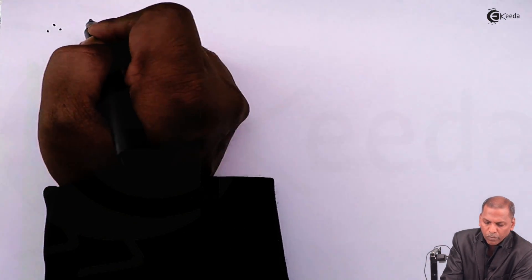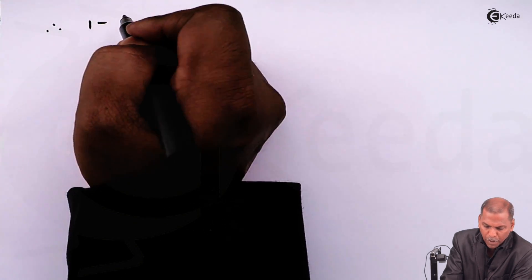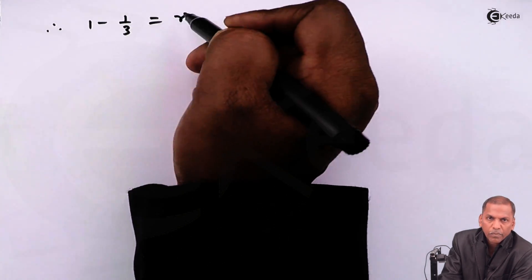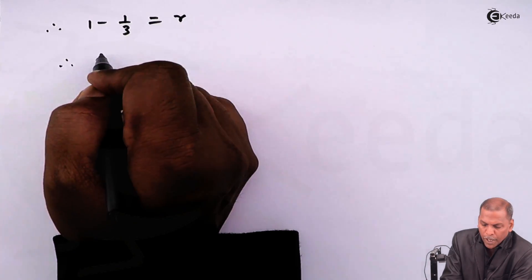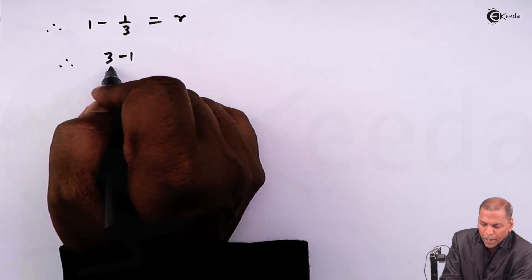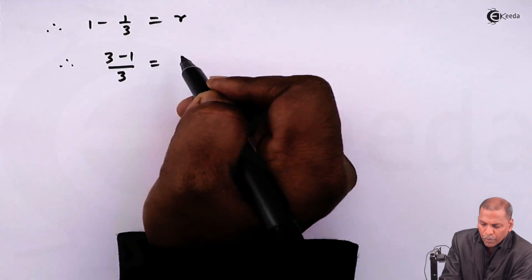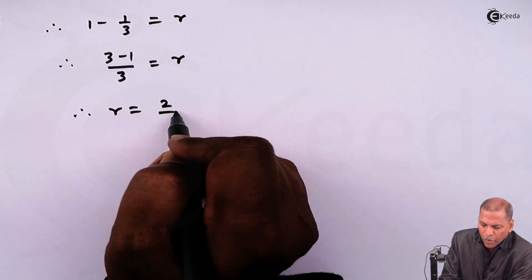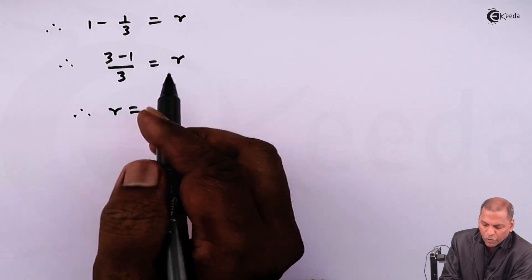Therefore, one minus one upon three is equal to r. Simplifying, we get three minus one upon three is equal to r. And therefore, r is equal to two upon three.